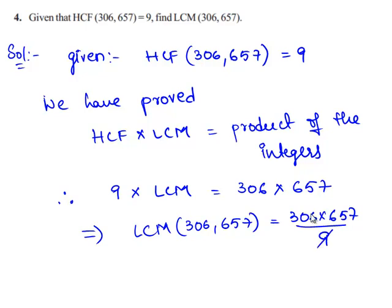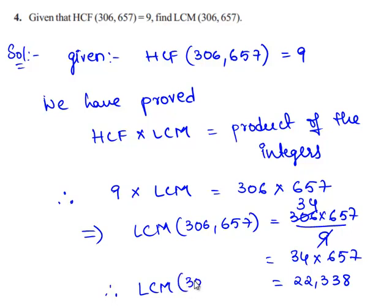Since 9 goes in 306 34 times, we are left over with 34 times 657, which gives 22,338. Therefore, LCM of 306, 657 is equal to 22,338.